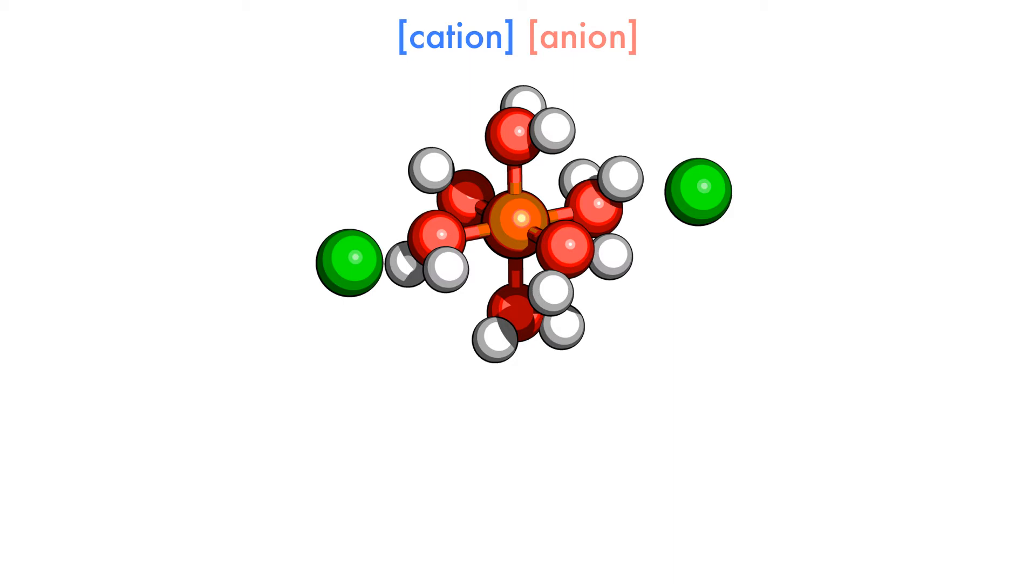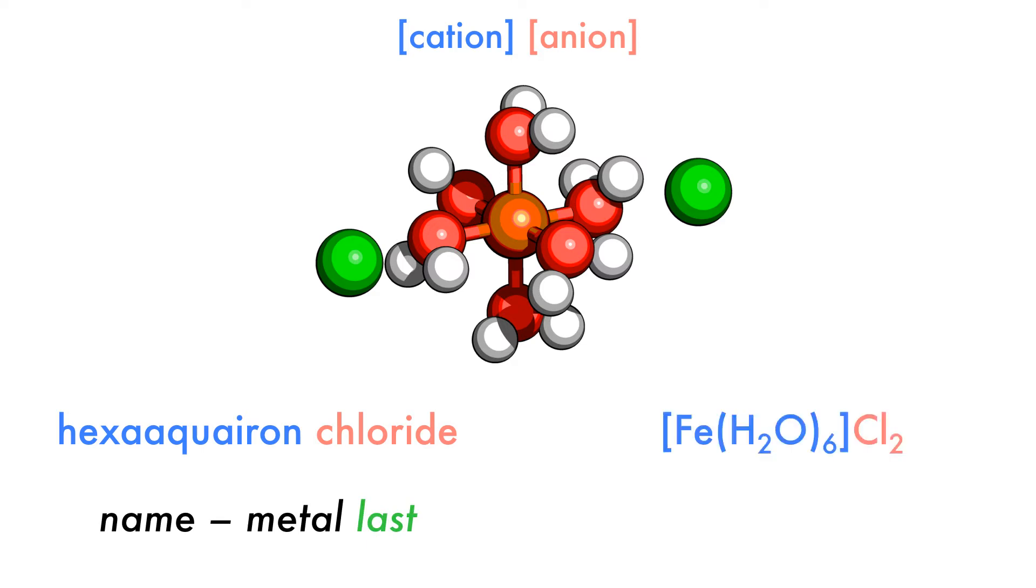Building on the first two rules, the next rule concerns the order of the components. For the name, we list the ligands before the metal with any prefixes ignored when considering the alphabetical order. For the formula, we reverse this rule. Within each bracket, the metal comes first, followed by the ligands.